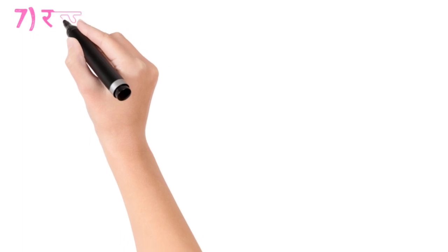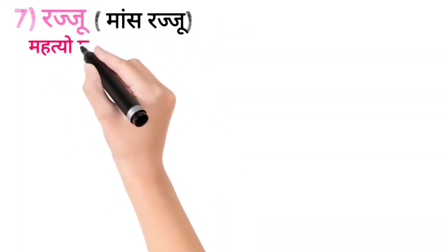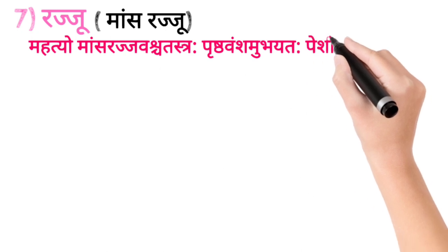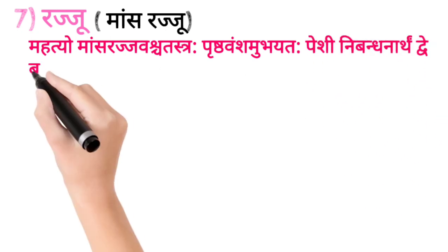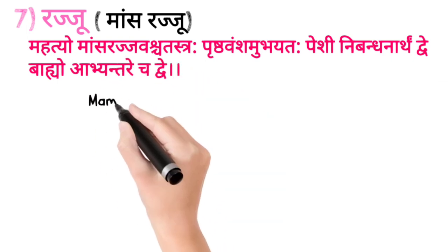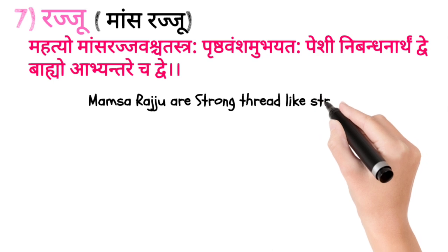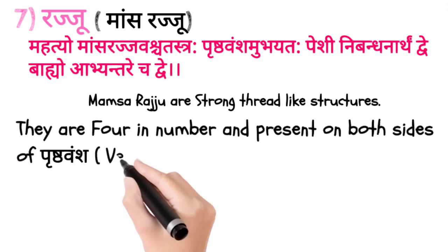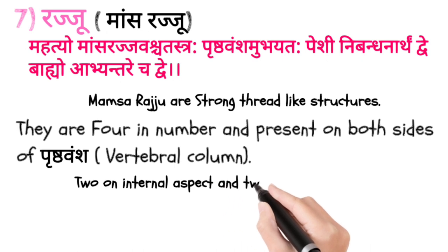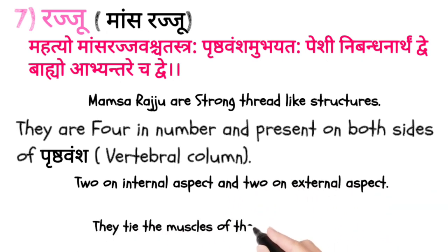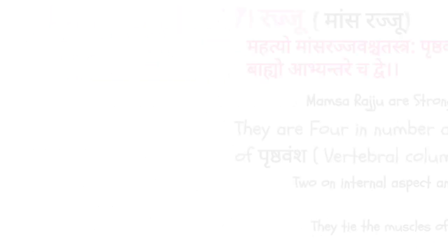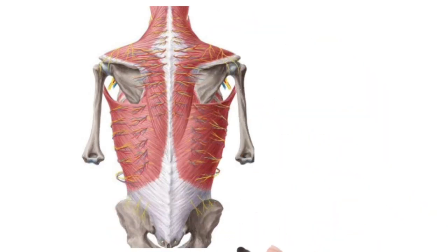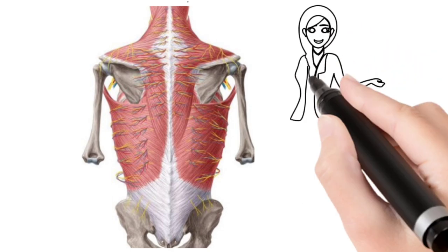Ab hum baat karte hain Raju ke bare mein jise Maas Raju bhi kaha jata hai. Mahattyo Maas Rajvash cha tasta prishtavansham ubhayata hai peshi nivandana artham dve baahyogo abhyantare cha dve. Aap shloka ko Hindi meaning ke saath relate karke learn karo to yeh kaafi easily learn ho jayega. Maas Raju jo hai wo strong thread-like structures hote hain. Yeh char hote hain number mein. Yeh dono side present hote hain prishtha vansh ke, prishtha vansh matlab vertebral column. Do internal aspect pe honge, do external aspect pe honge. Surrounding ki jo muscles hoti hain unko aapas mein tie karte hain. Yahan maine Maas Raju ki ek picture attach kiya hai jismein aapko clearly dikh raha hoga ki thread-like structures hain jo ki muscles ko aapas mein bind kar rahe hain.